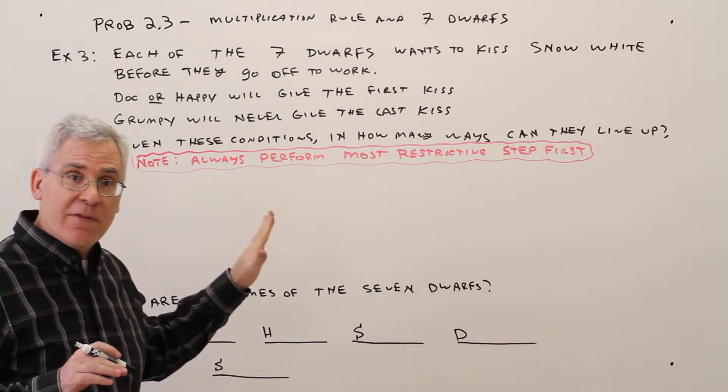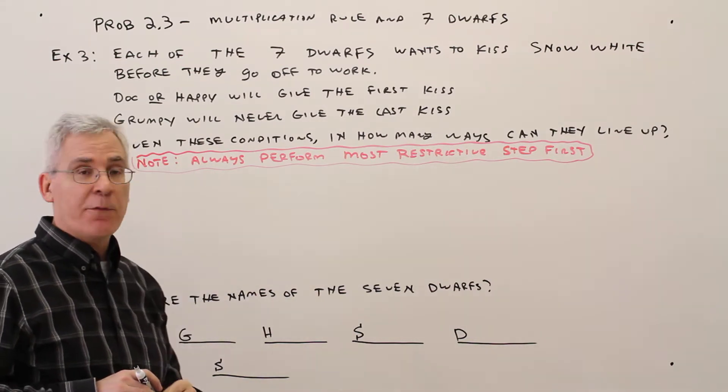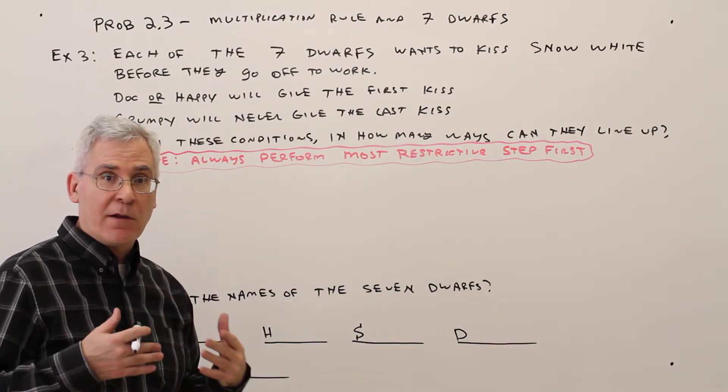So Part A, given these conditions, in how many different ways can the seven dwarfs line up to give the kiss?